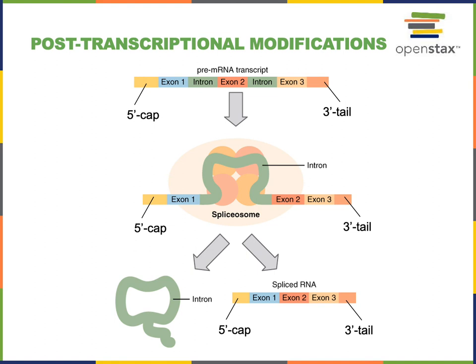Then on the three prime end, a three prime tail is added. The three prime tail consists of a repeated adenine sequence where around 250 adenine nucleotides are added on at the three prime end, and this helps to protect RNA from being degraded by RNAase nucleases — enzymes that are constantly breaking down RNA in order to release the nucleotides and recycle them for producing new RNA.